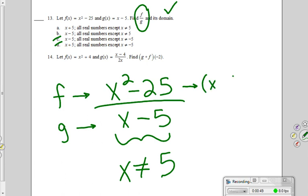This is called the difference of two squares. It's going to be x plus 5 times x minus 5. And there's an x minus 5 in the denominator.